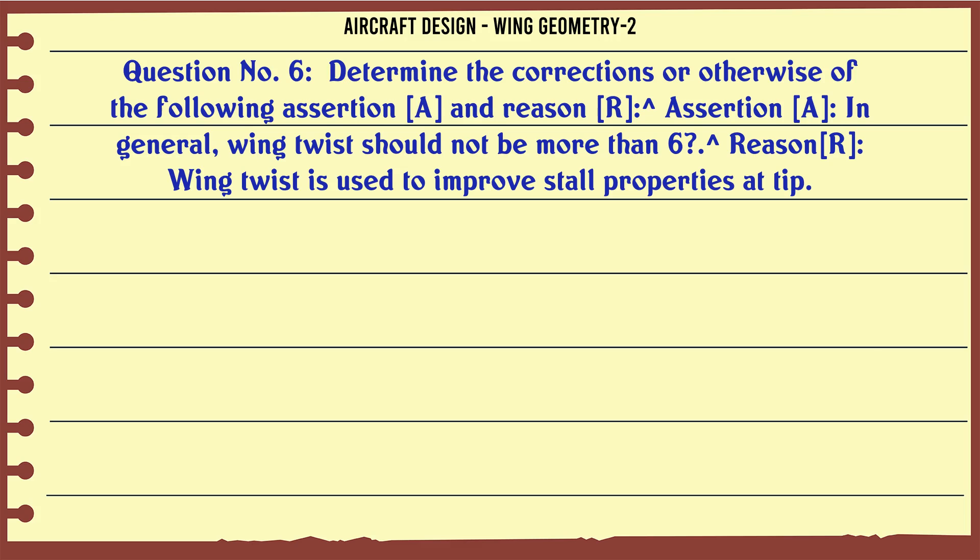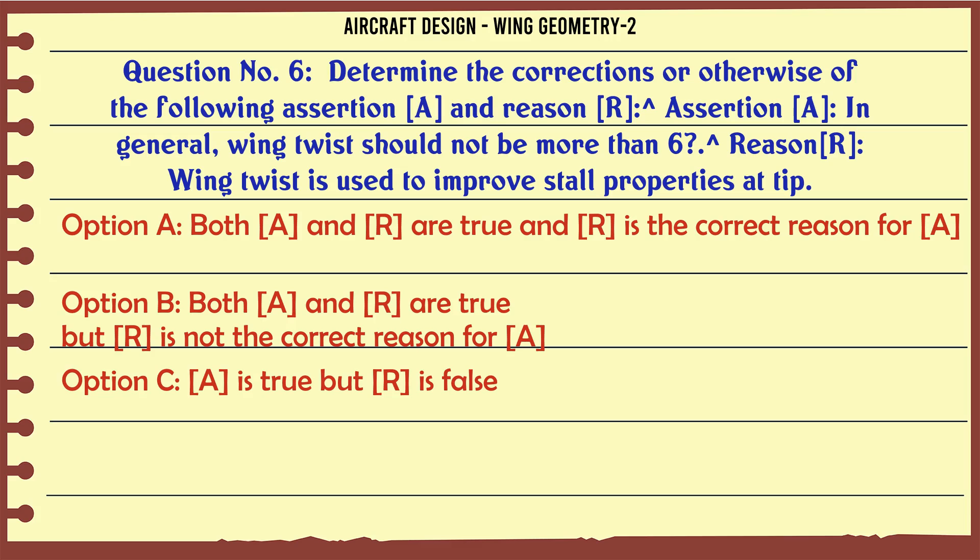Determine the correctness or otherwise of the following assertion A and reason R. Assertion A: In general, wing twist should not be more than 6 degrees. Reason R: Wing twist is used to improve stall properties at tip.